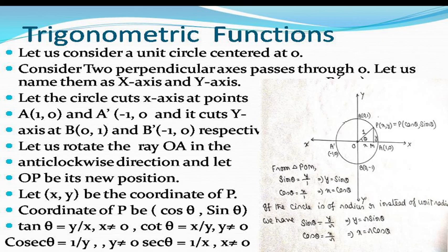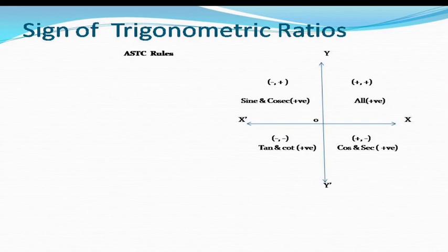If we consider a circle of radius r instead of a unit circle, then from the right triangle: sin θ = y/r and cos θ = x/r, so y = r sin θ and x = r cos θ.